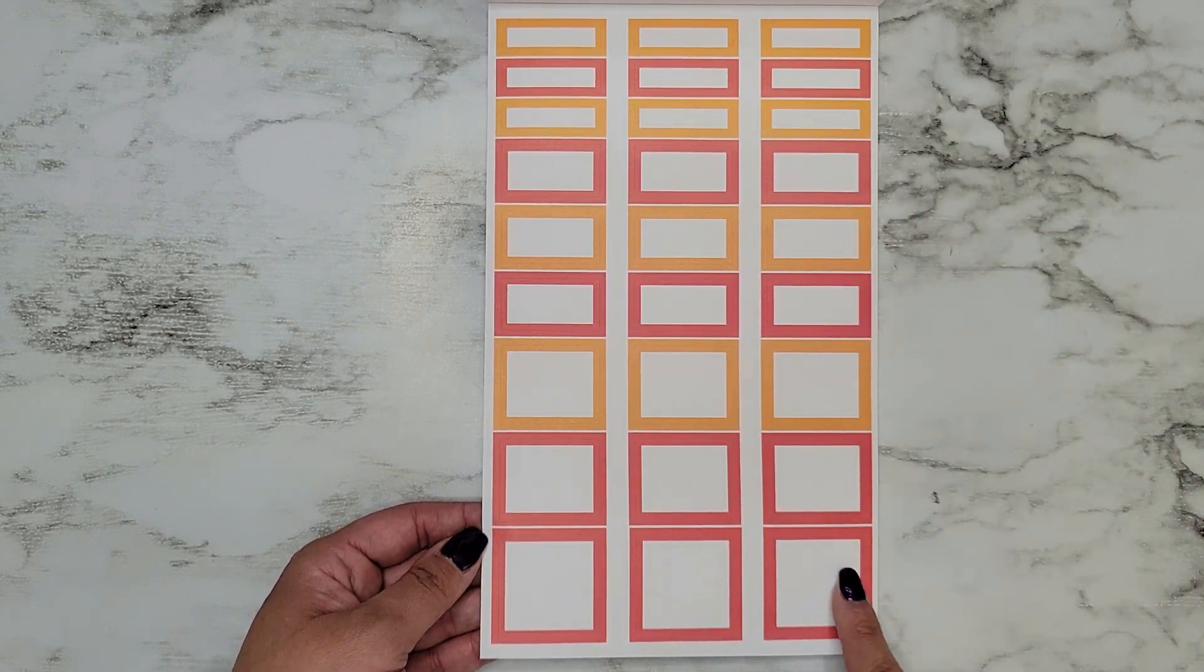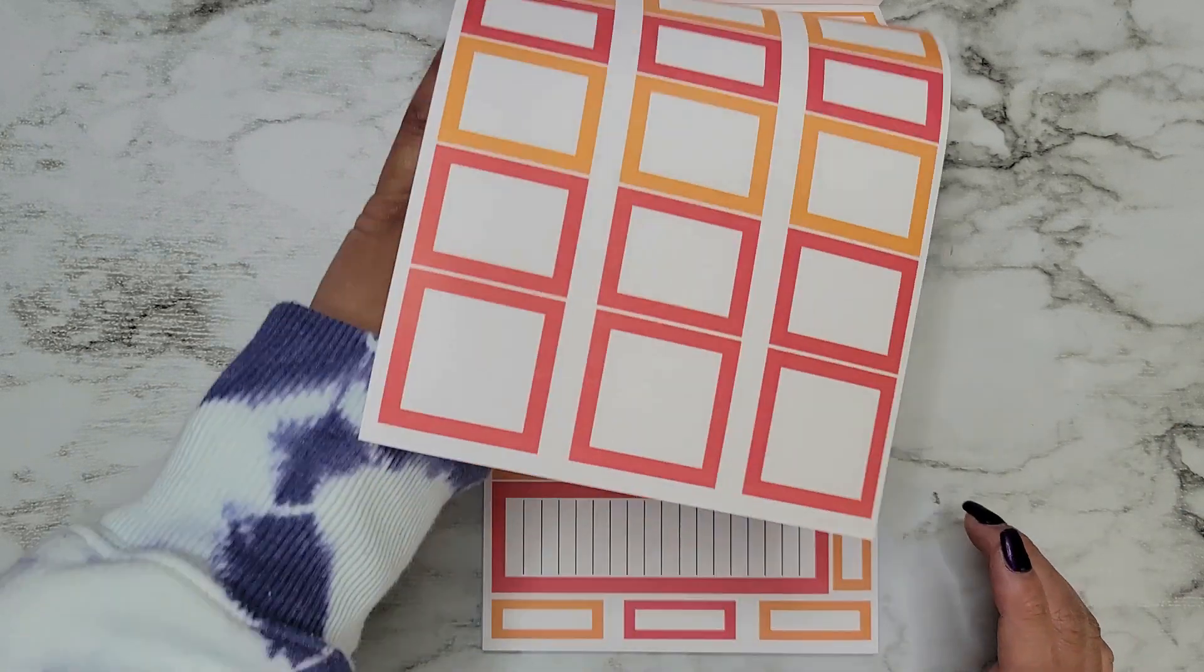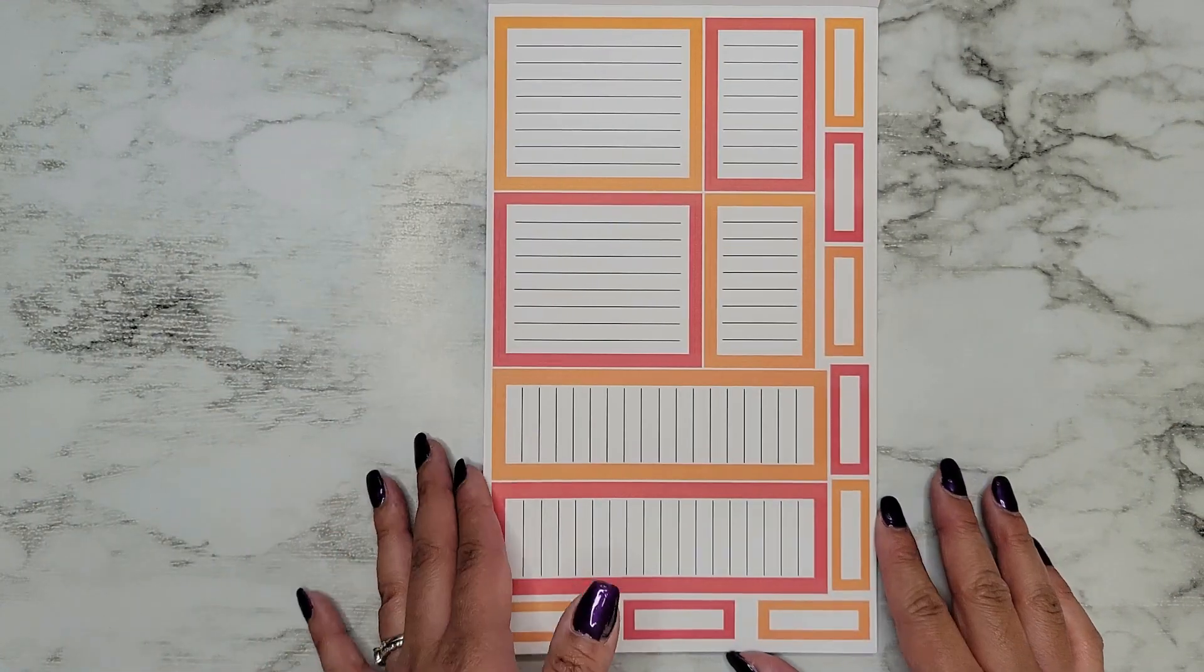We have our quarter, these ones are like about double of the quarter, and then these down here are squares and these are a little bit smaller than squares. Then we get our pages with the lines.